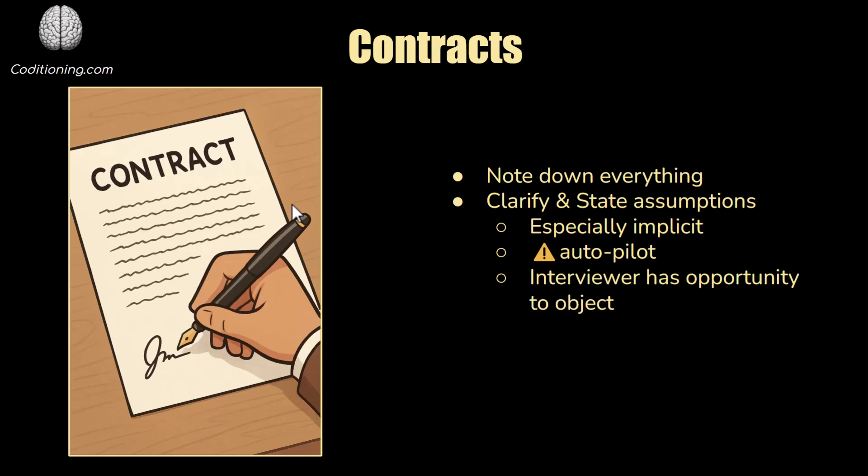Force the interviewer to confirm that they're happy with the requirements you've gathered. You can ask something like, 'Is my understanding correct? Are these the requirements you're looking for?' — which gives them an opportunity to object and say something's missing. It's very important because once you have your contract, you can go off and do your design. Make sure they sign off, and you're going to use this as a checklist once you're done with your design to prove that you've designed what they're actually looking for.